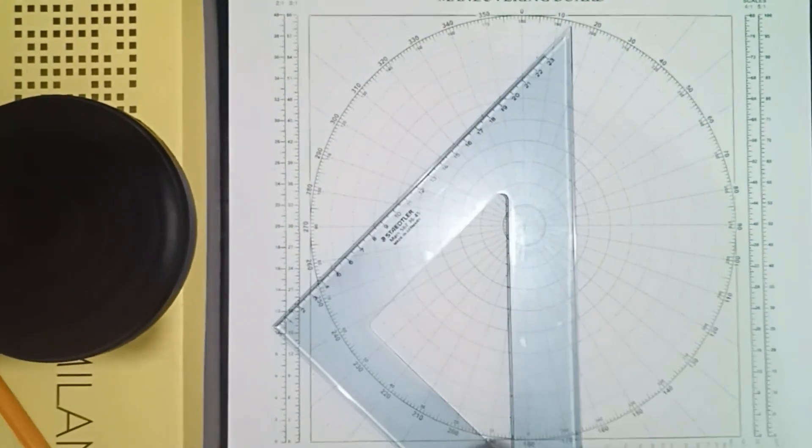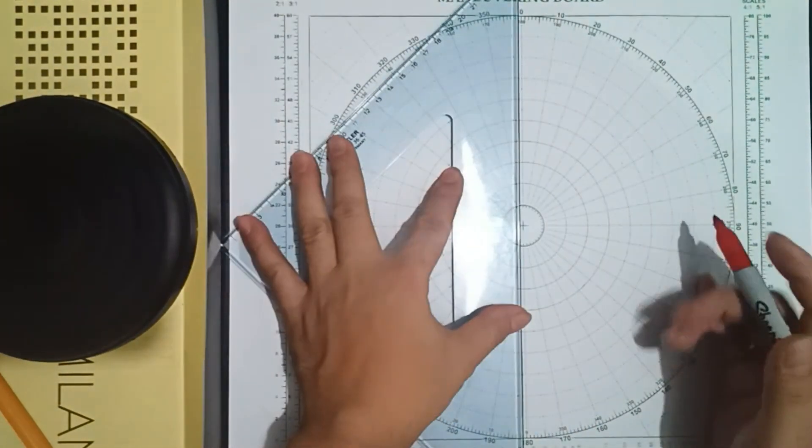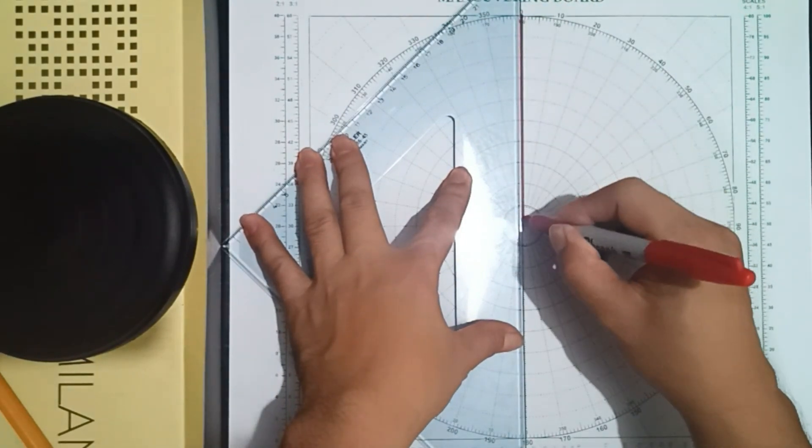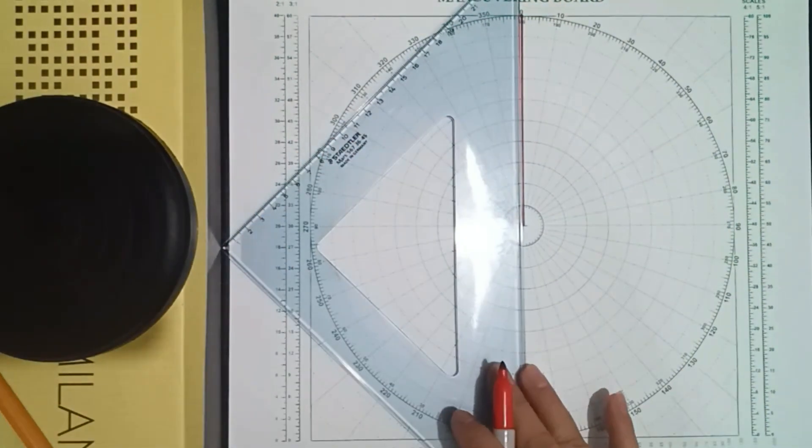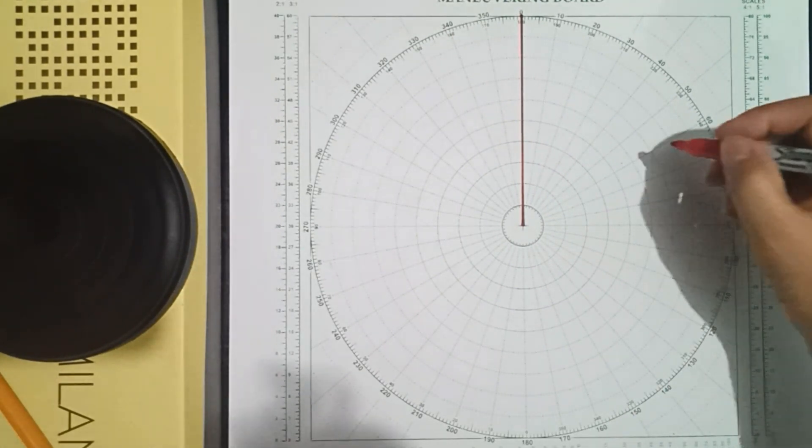Let's say our own course is 0 degrees. Then let's say you have here the first observation of the target. It's here.